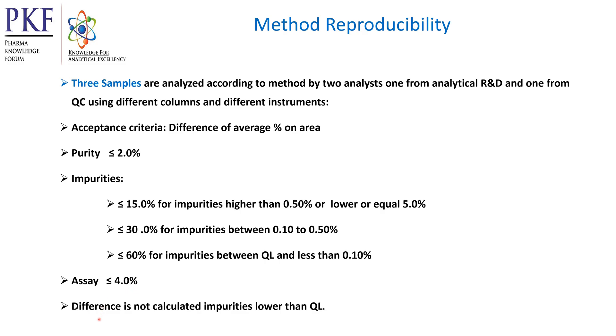For impurity: difference should be less than or equal to 15% for impurity higher than 0.50%; less than or equal to 30% for impurity between 0.10% and 0.50%; and less than or equal to 60% for impurity between the quantitation limit and less than 0.10%. For assay, the difference between the two results from the sending lab and receiving lab should be less than or equal to 4%. Difference is not calculated for impurity values less than the quantitation limit.